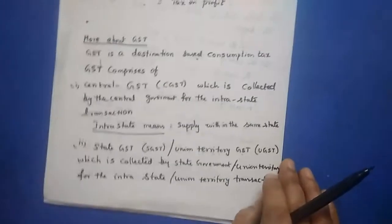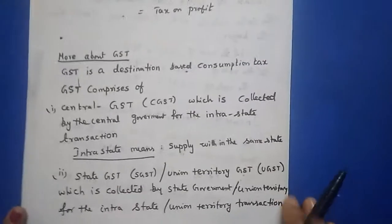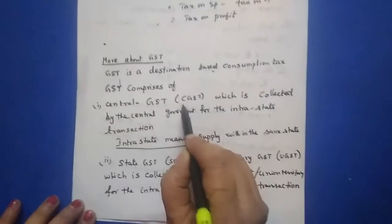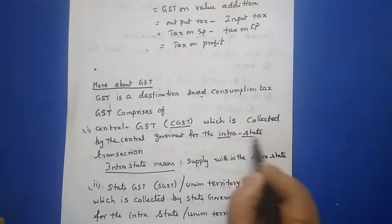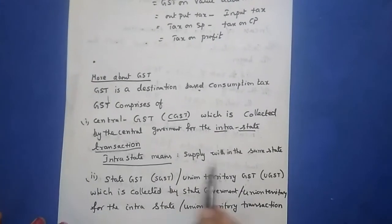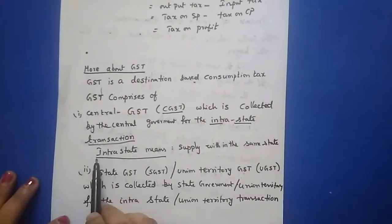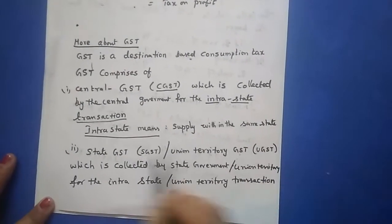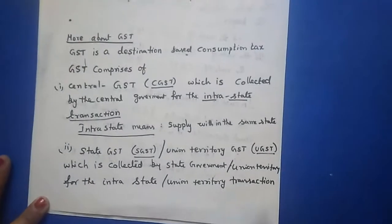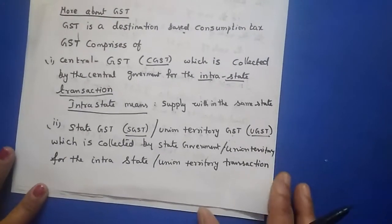GST is a destination-based consumption tax. GST comprises: first, Central GST (CGST), which is collected by the central government for intrastate transactions — meaning supply within the same state, such as within Karnataka, Tamil Nadu, or Maharashtra. Second, State GST (SGST) or Union Territory GST (UGST), which is collected by the state government or union territory for intrastate or union territory transactions.